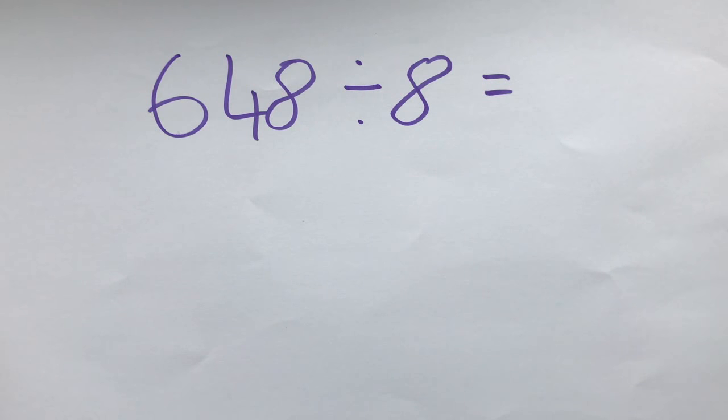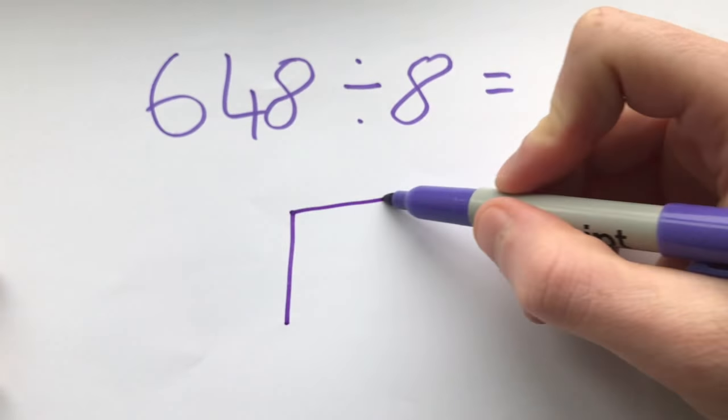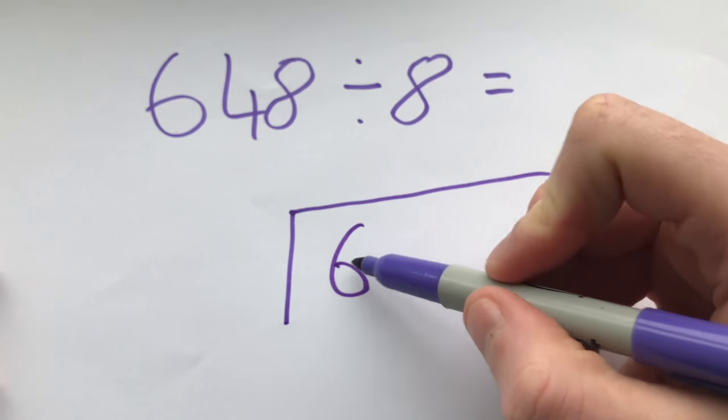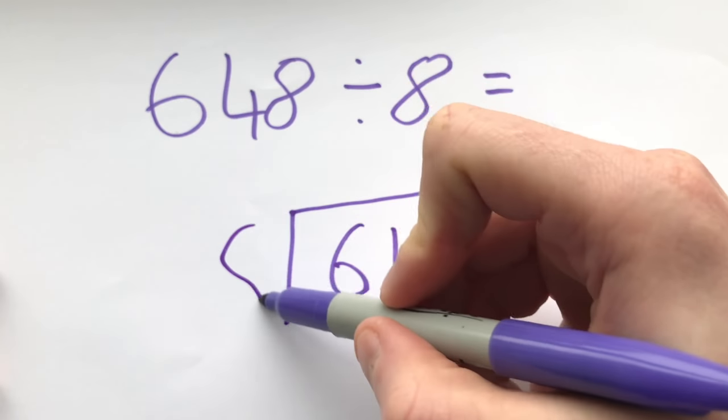For my second example we're going to be doing a slightly trickier one. So again we draw the bus stop. The number that we're dividing goes inside and the number that we're dividing by goes outside.